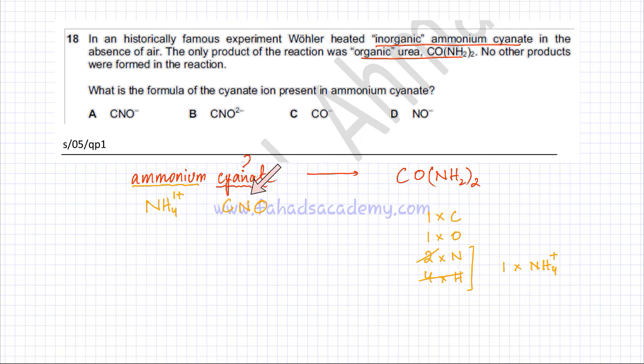So it must be CNO, and what should the charge on this cyanate be? Because ammonium is plus one, this cyanate over here must be minus one, only then would you get a neutral compound. So the answer to this question is going to be A.